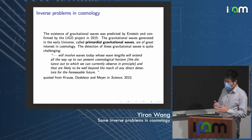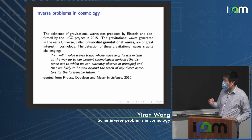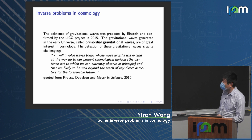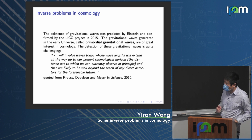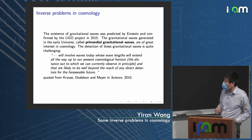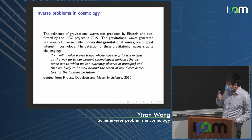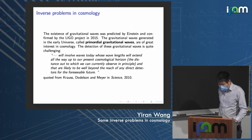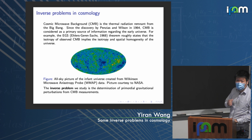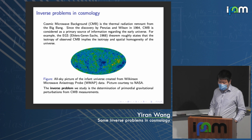The LIGO gravitational wave detector is designed to detect compact space-time distortions. However, these primordial gravitational waves — quoting a paragraph from the paper by Krauss, Dollison, and Meyer — will involve waves today whose wavelength extends all the way up to the cosmological horizon. Therefore, they are likely to be well beyond the reach of any direct detector for the foreseeable future, making detection challenging.